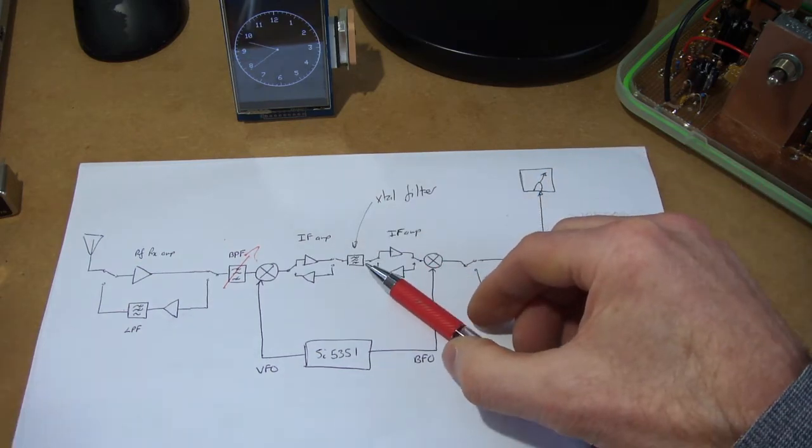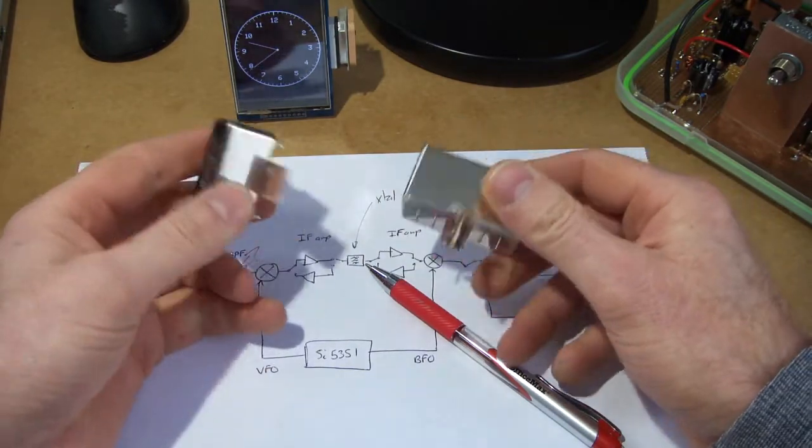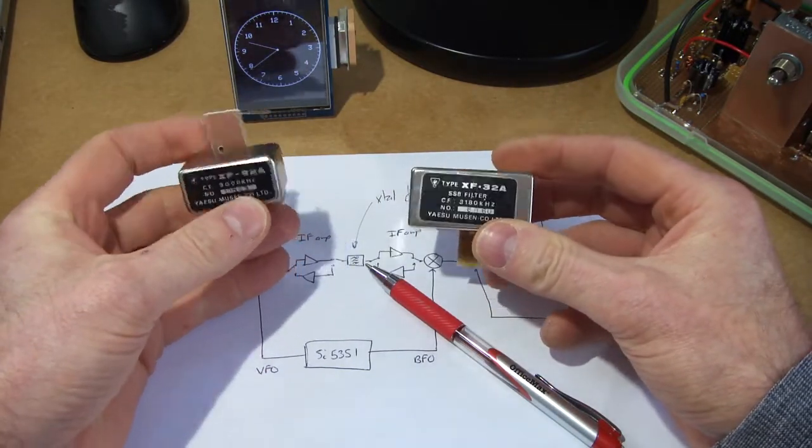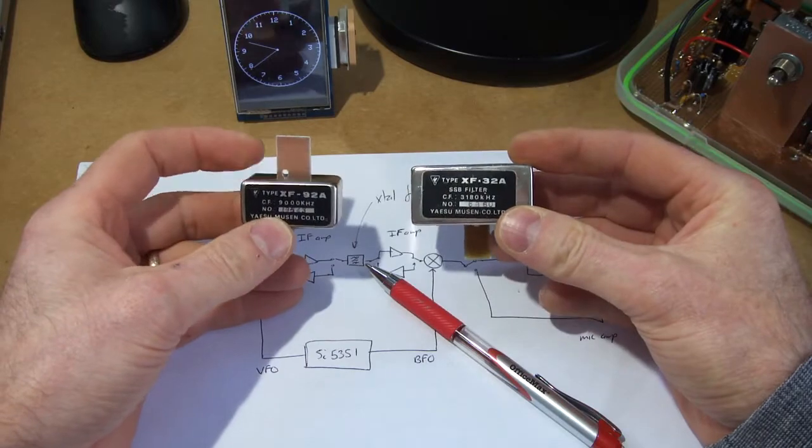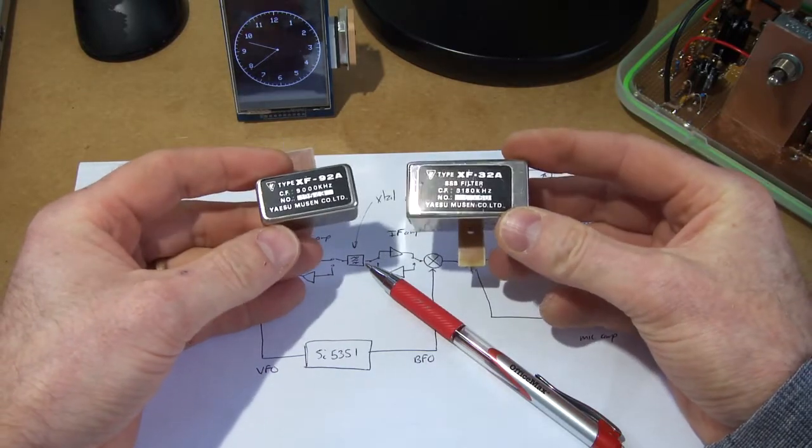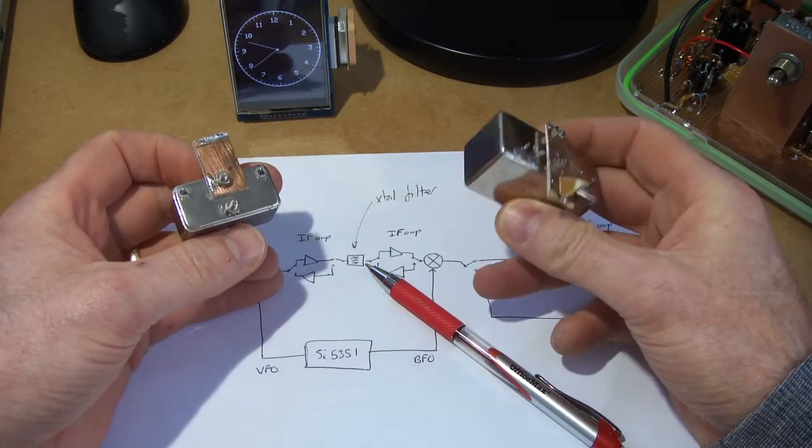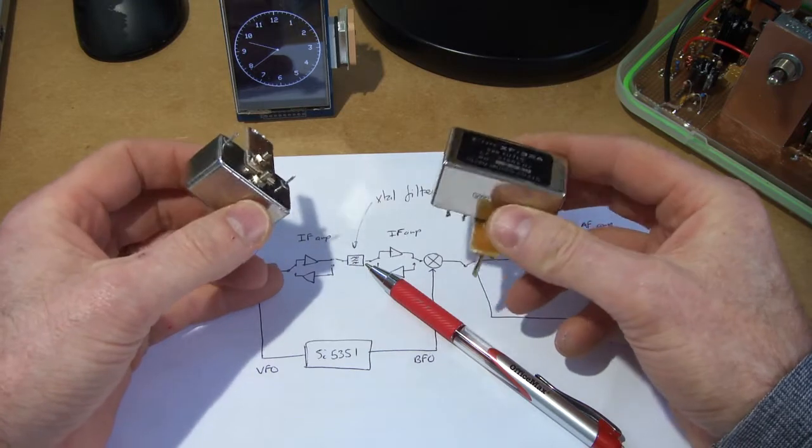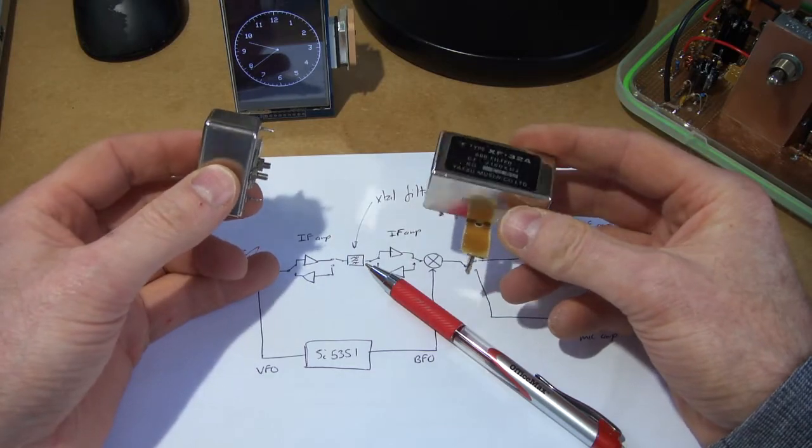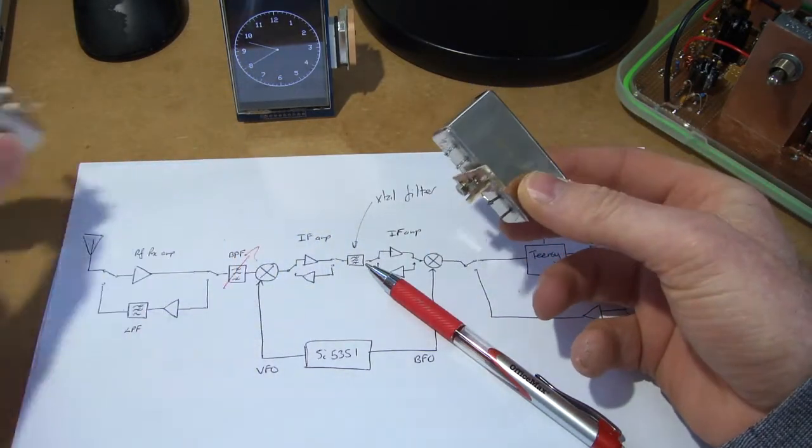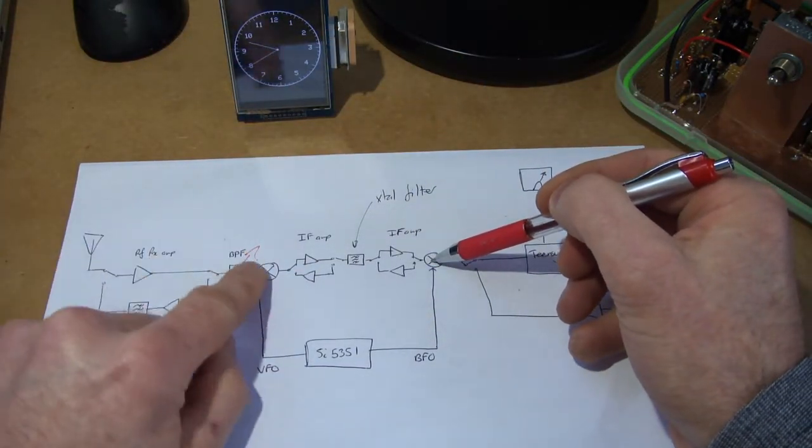For the crystal filter, again just junk box components. Here's a couple I had lying around the junk box, one sitting at nine megs and the other one sitting at 3.18 megs. We could look at potentially looking at the mathematics and work out which is the better IF for the type of radio. But again, we can look at using these. Junk box filters—I'm not going to get in the game on this particular radio of designing a crystal filter. I'm quite happy just to use these out of the box.